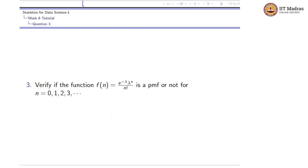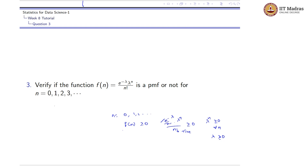First, for each value of n = 0, 1, 2, 3, ... , f(n) should be greater than or equal to zero. That means e^(-λ) · λ^n / n! should be greater than or equal to zero. We know that e^(-x) is never less than zero, so it is always positive, and n! is always positive. So λ^n should be greater than zero for all n, which means λ should be greater than or equal to zero. Only if λ ≥ 0 will f(n) ≥ 0 for every n = 0, 1, 2, 3, ...